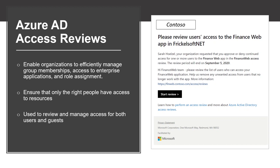Azure Active Directory Access Reviews enables organizations to effectively manage group membership, access to enterprise applications, and role assignment. Regular access reviews ensure that only the right people have access to the resources. Excessive access rights are a known security risk. However, when people move between teams, take on or relinquish responsibilities, access rights can be difficult to control. Access reviews are helpful when you have too many users in privileged roles, such as a global administrator, or when automation isn't possible, such as when HR data isn't in Azure Active Directory.